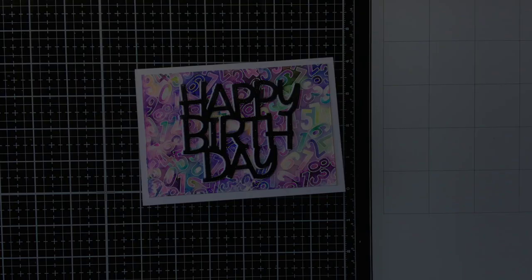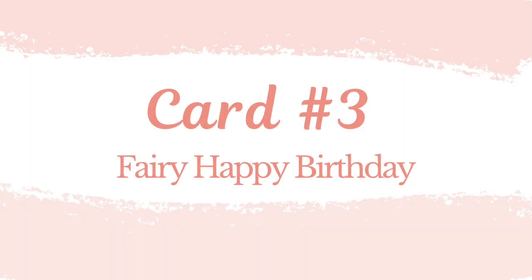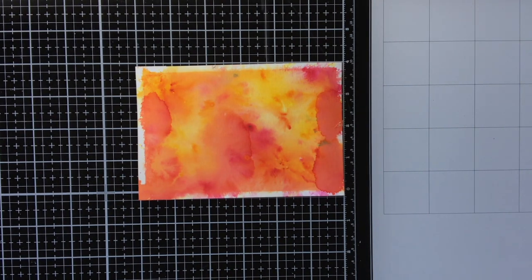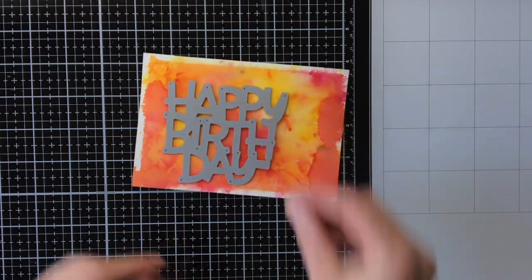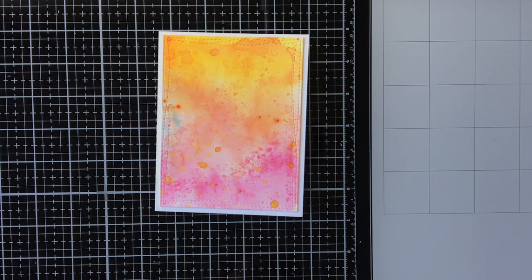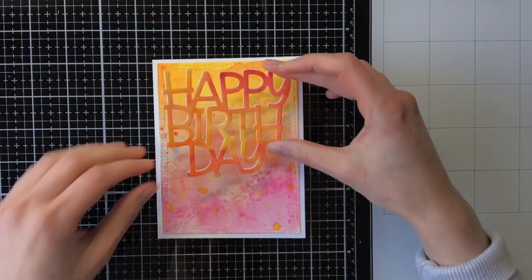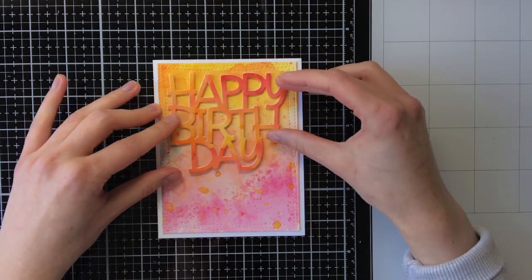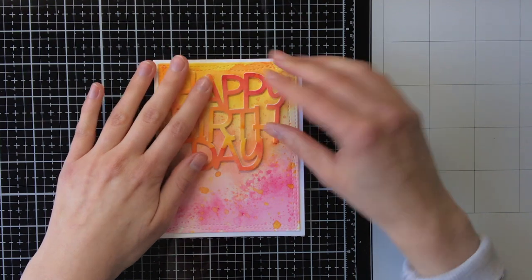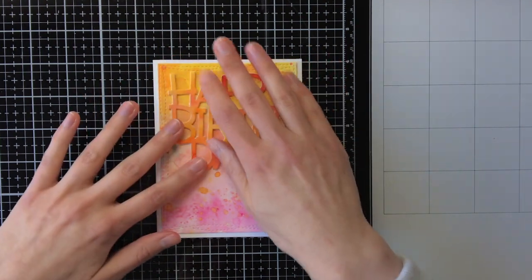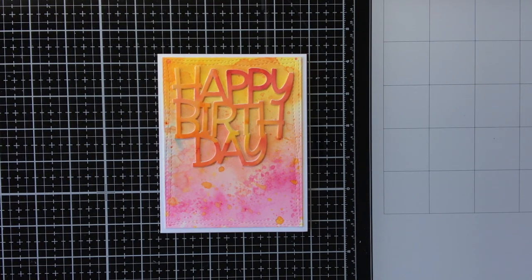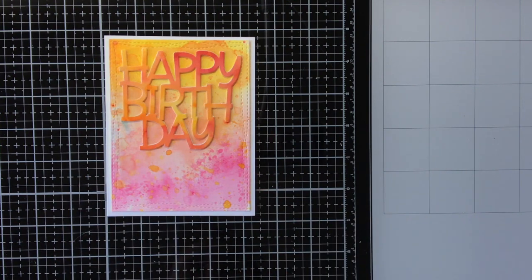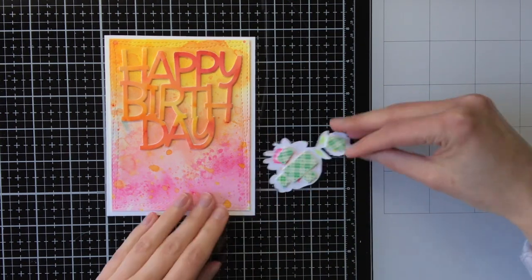Then for the last card, the third one, I actually used two different backgrounds I created in this video. This background is the one where I directly sprinkled and sprayed the powders on the watercolor cardstock, the plain one. I'm going to die-cut the happy birthday die from it and glue this happy birthday on the other background I created with the smooshing technique. I really like this look because the happy birthday is actually from a different background, but as it's been created with the same colors, it still matches really nicely with the other background.